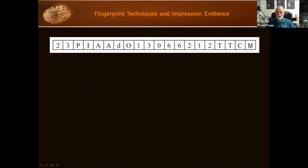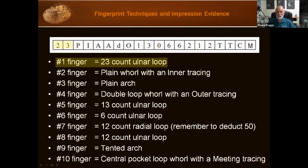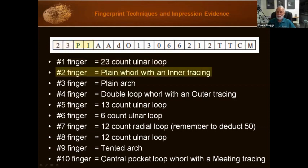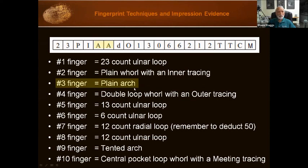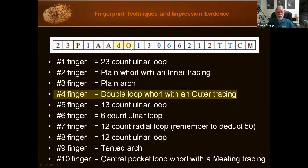Let's look at this combination on the card to see what we have. The first two boxes are finger number one, the right thumb — a '23' count ulnar loop, because we have '23' showing the count. Number two, the index finger on the right hand: 'PI' — capital P, capital I — that's a plain whorl with an inner tracing. Number three: double A's, two capital A's — that's a plain arch. Number four: lowercase 'd', capital 'O' — that's a double loop whorl with an outer tracing.